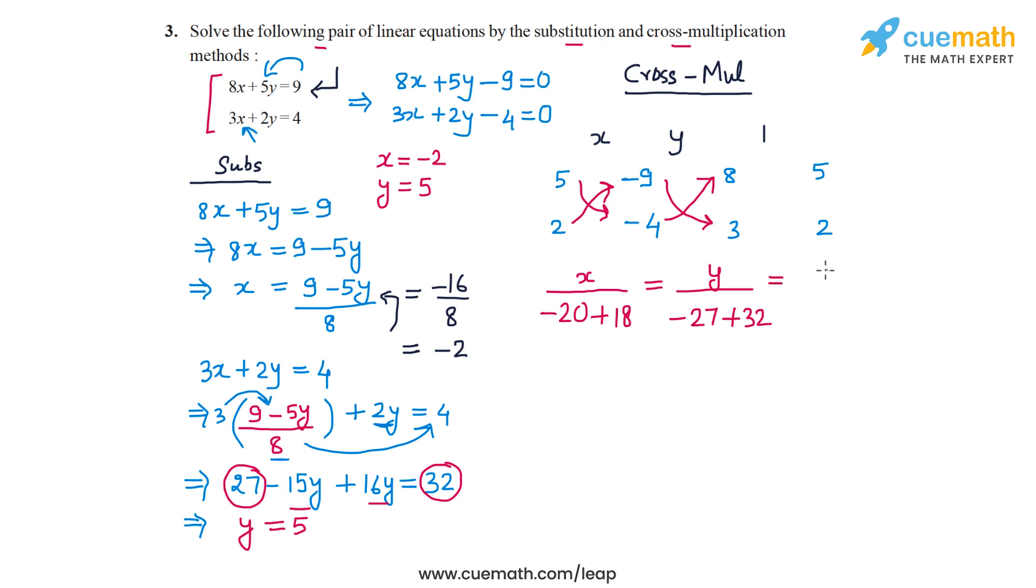And then we will have 1 by 8 times 2, so that's 16, minus 3 times 5, so that's minus 15. And from here we get x by minus 2 equal to y by 5 equal to 1 by 1.